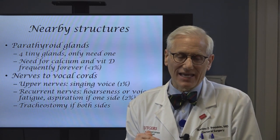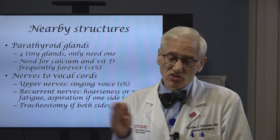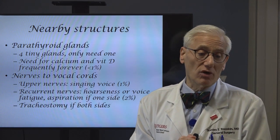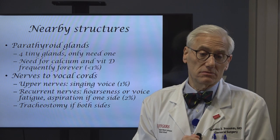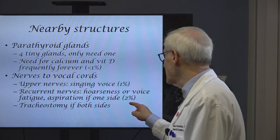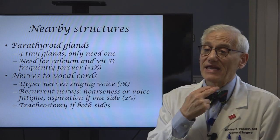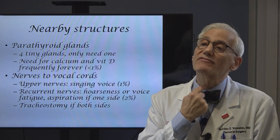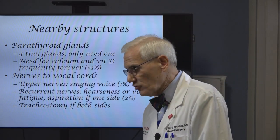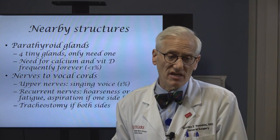As it branches, it's more and more delicate. If the thyroid tissue is stuck to it, it could get stretched, and if it gets stretched or swollen, it may not work for a while. It could look perfectly normal and not work. If that nerve is injured on both sides, then the patient can't breathe. The opening between the vocal cords is too small, and people have to breathe through a hole in the windpipe called a tracheostomy. I knock wood and say I have not had to do an unplanned permanent tracheostomy on any of the thousand patients I've operated on.